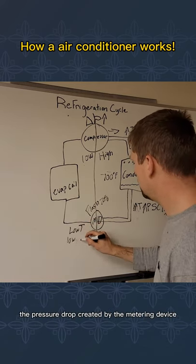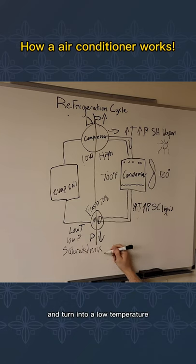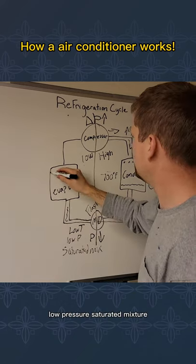The pressure drop created by the metering device will allow the refrigerant to flash off and turn into a low-temperature, low-pressure, saturated mixture.